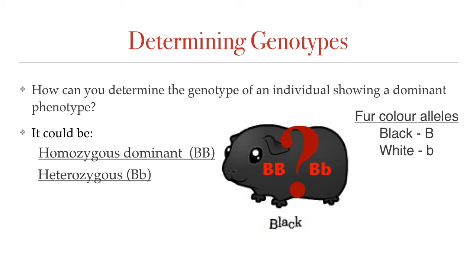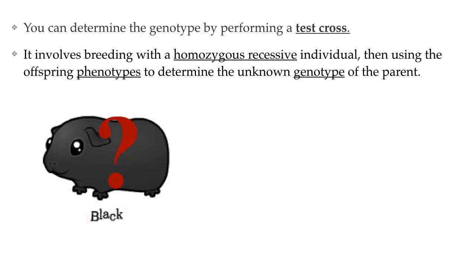So what could you do if you really wanted to know whether Bob was homozygous or heterozygous? The technique that Mendel developed is called a test cross, and it is still used by plant and animal breeders today. To perform a test cross, you will need to breed your guinea pig with another guinea pig whose genotype you are sure of. Then you will look at the offspring and use them as clues to Bob's genotype.